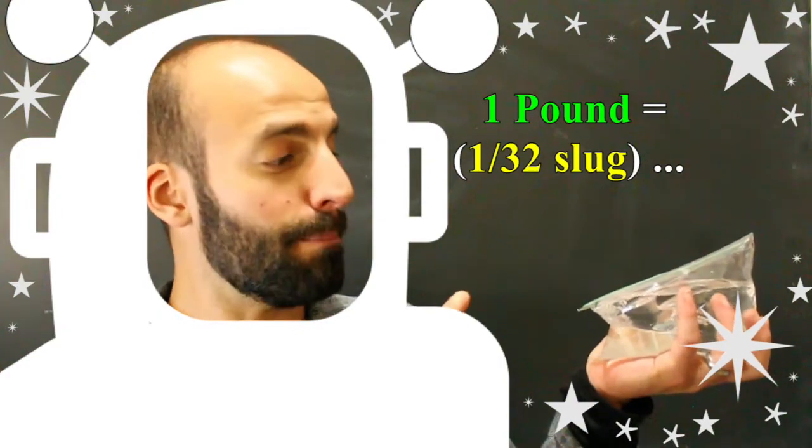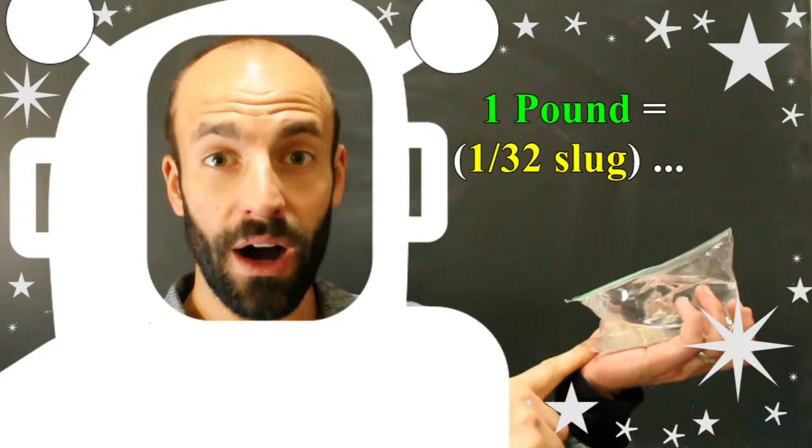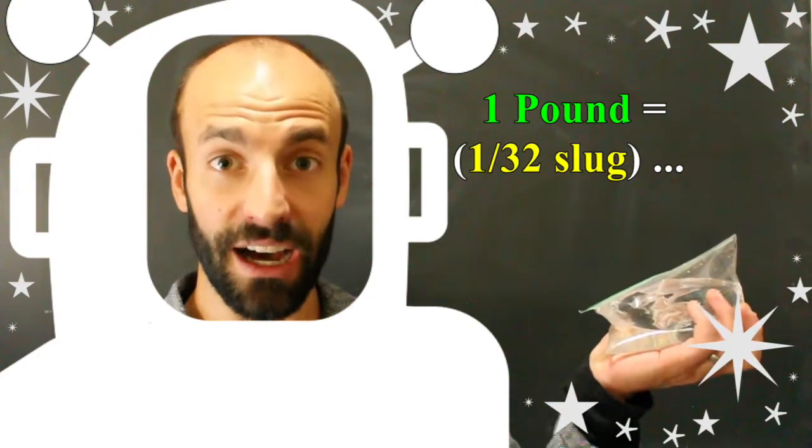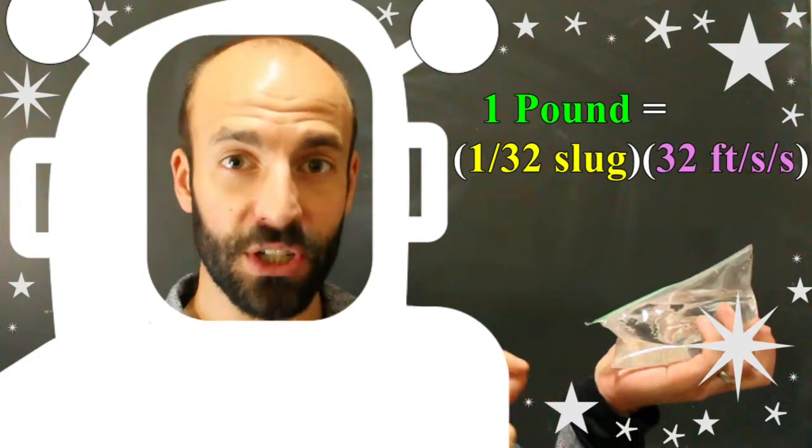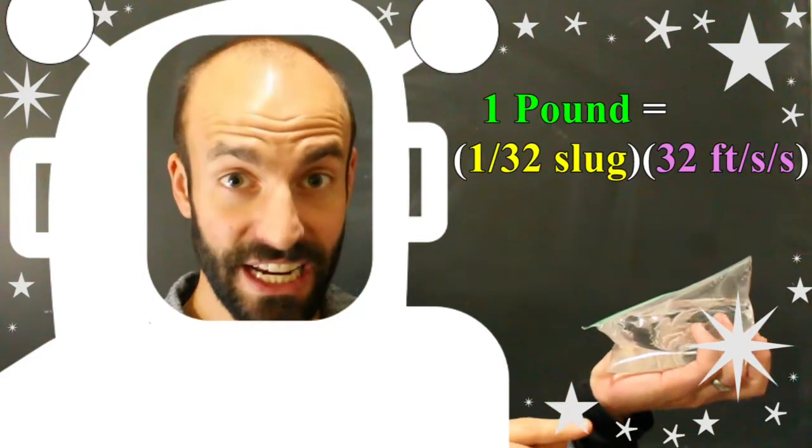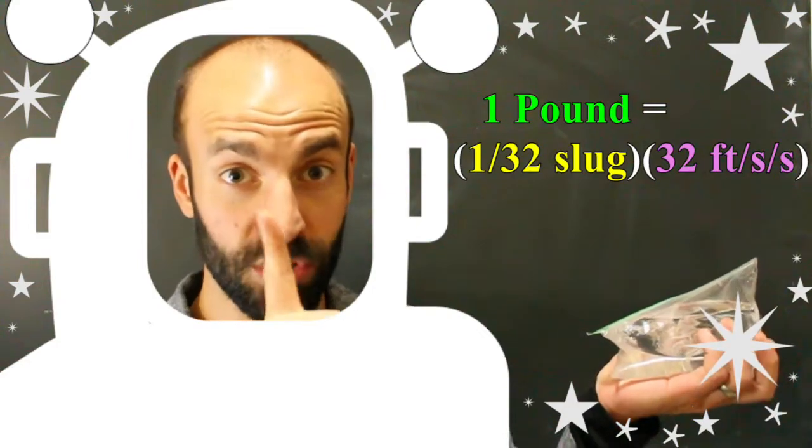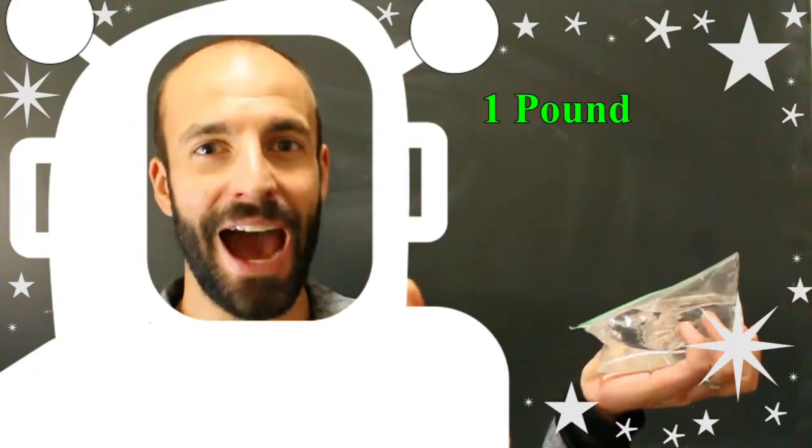Such that if we were to multiply this 1/32 of a slug by the 32 feet per second per second acceleration due to gravity on earth, that equals one. One pound.